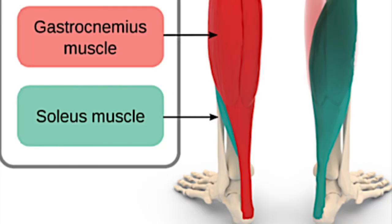At UB58, something interesting happens: the urinary bladder meridian shifts laterally. UB58 is located seven cun above UB60, UB59 is three cun above UB60, and UB60 sits between the lateral malleolus and the Achilles tendon. The soleus muscle, which is also part of the superficial back line and lies underneath the gastrocnemius, can be accessed through this area — I'll refer to UB58 to UB60 as the soleus band.